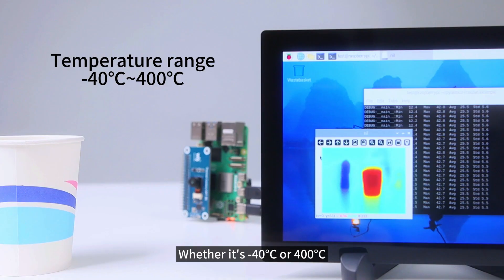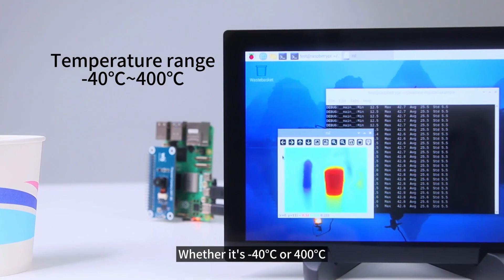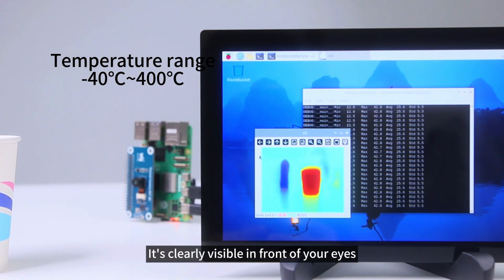Whether it's minus 40 degrees Celsius or 400 degrees Celsius, it's clearly visible in front of your eyes.